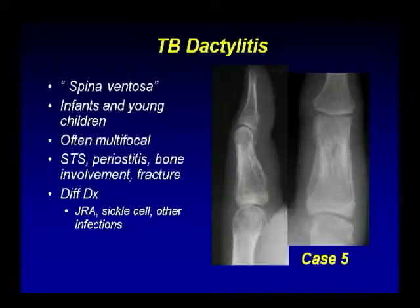TB dactylitis is usually found in younger patients and can be multifocal, associated with soft tissue swelling, periostitis, bone involvement, and may cause fractures. This corresponds to case number five — the 25-year-old male with chronic thumb swelling. Differential diagnosis for TB dactylitis includes juvenile idiopathic arthritis, sickle cell disease, and other infections.